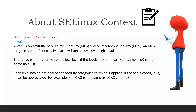To summarize the SELinux labeling format: there are four parts — user, role, type, and level — each separated by a colon.